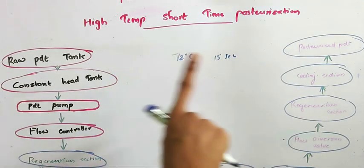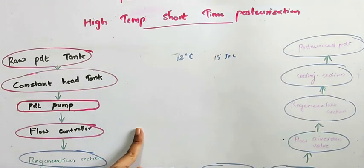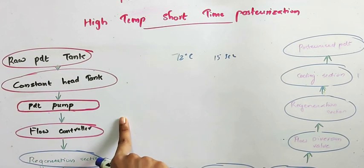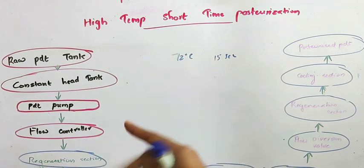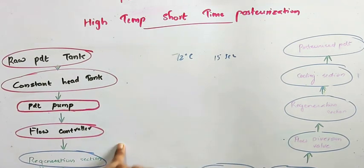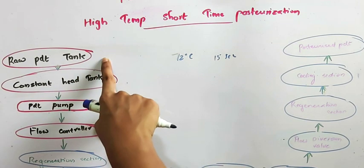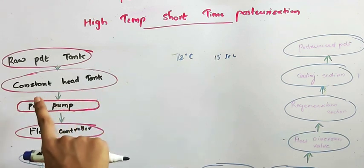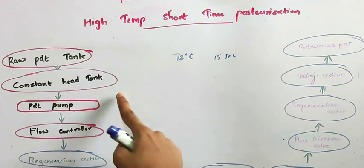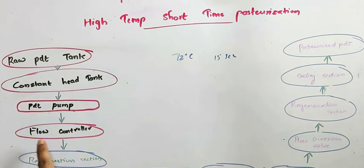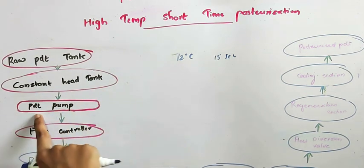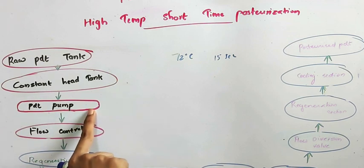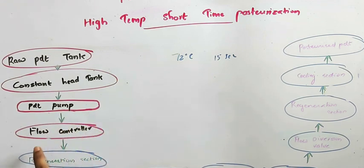This is the flow diagram for HTST pasteurization. Firstly, there is a raw product tank where we store our raw product. From the raw product tank, the product reaches the constant head tank, and from the constant head tank the product is pumped into a flow controller with the help of a product pump.